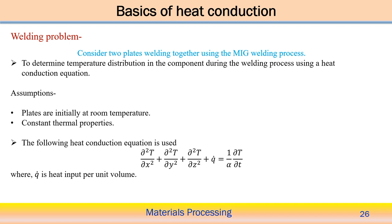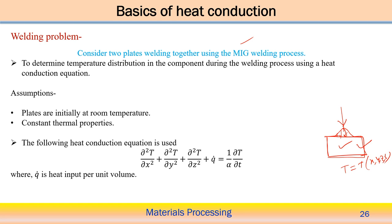Now we look at the welding problem. Consider two plates being welded together using the MIG welding process. The MIG welding process applies heat from a torch to the domain, heating the sample. We are interested in the temperature distribution over this surface during the welding process. The heat conduction equation is used to solve it. The plates are initially at room temperature — the initial condition — and constant thermal properties are assumed.